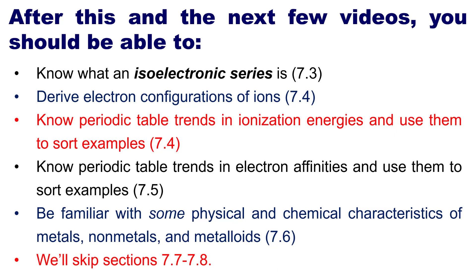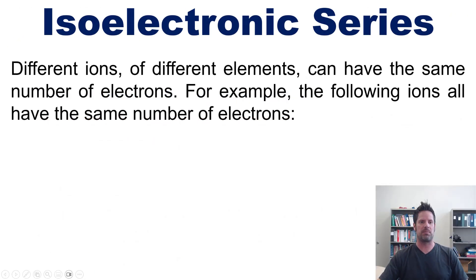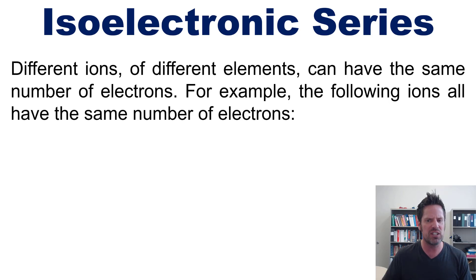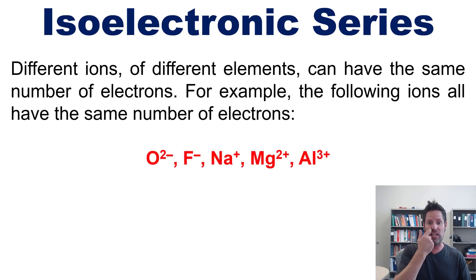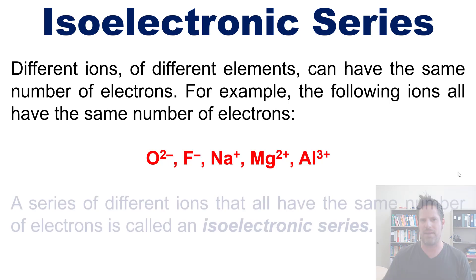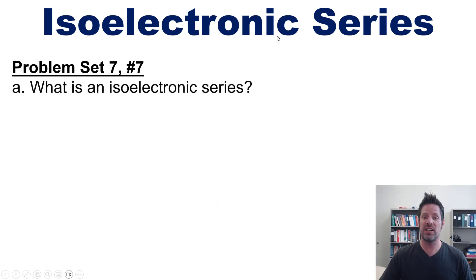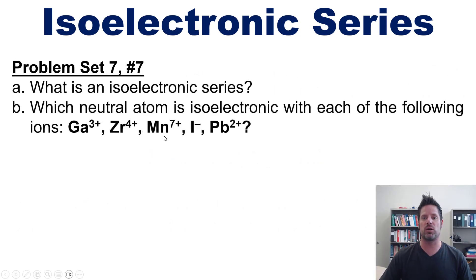Let's get into it, beginning with isoelectronic series. Different ions of different elements can have the same number of electrons — not the same number of protons, but the same number of electrons. A series of different ions that all have the same number of electrons as each other is called an isoelectronic series.